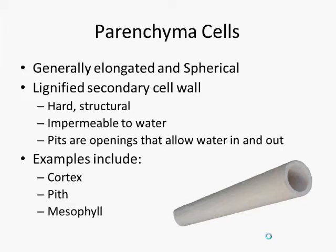Examples of parenchyma cells include the cortex, pith, and mesophyll. These will be covered in later episodes.